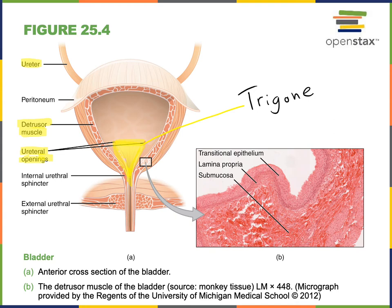The internal urethral sphincter is a ring of smooth muscle at the opening of the urethra from the urinary bladder that provides involuntary control over opening of the urethra to help regulate micturition. The external urethral sphincter is skeletal muscle that enables voluntary control over micturition.